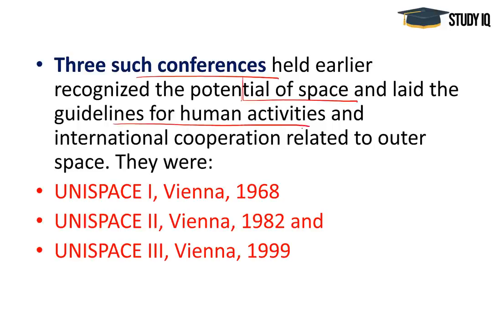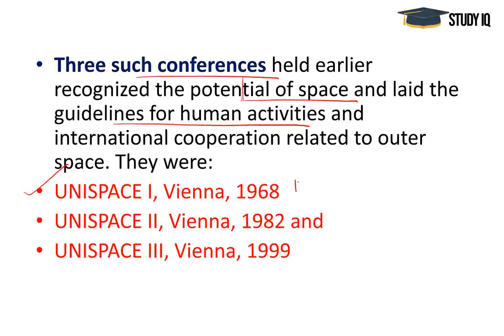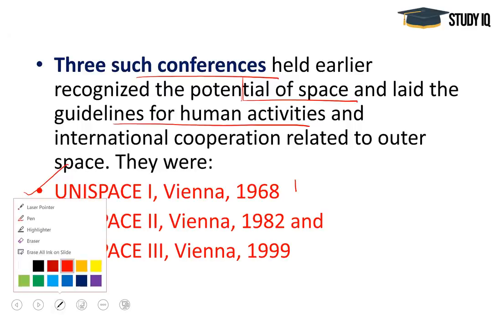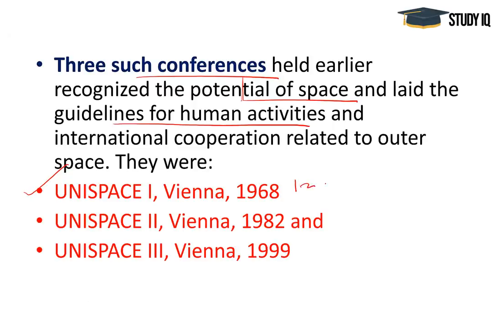Before UNISPACE 50, three such conferences were held to recognize the potential of space and lay guidelines for human activities. UNISPACE I was held in Vienna from 14th to 27th August 1968. It was the first in a series of three global UN conferences on outer space, focused on raising awareness of the vast potential of space benefits for all humankind.